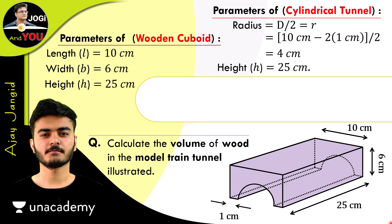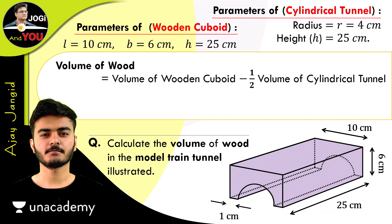So we have all the parameters of the wooden cuboid and the parameters of the cylindrical tunnel. So how to calculate it? For calculating the volume of this purple wood tunnel, the volume of wood is the volume of the wooden cuboid minus half of the volume of the cylindrical tunnel, because this cylindrical tunnel is not complete—it's cut from the downside. So for calculating the volume, we make this in the form of a formula. First of all, what is the volume of the wooden cuboid? It's l × b × h. So what is the volume of this half-cut cylindrical tunnel? The formula is half × π × r² × h.